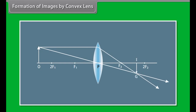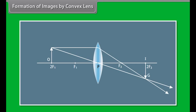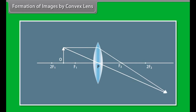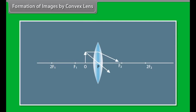When the object is placed at 2F, the image forms at 2F on the opposite side — real, inverted, and same size. When the object is placed between 2F and F, the image forms beyond 2F on the opposite side — real, inverted, and enlarged. When the object is placed at F, the image forms at infinity — real, inverted, and enlarged. When the object is placed between F and the optical center, the image forms on the same side — virtual, erect, and diminished.